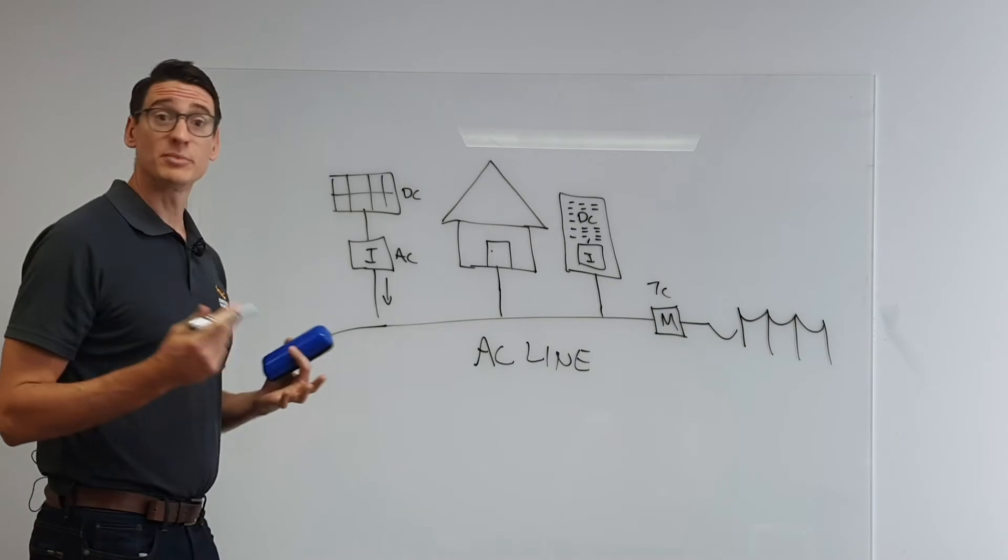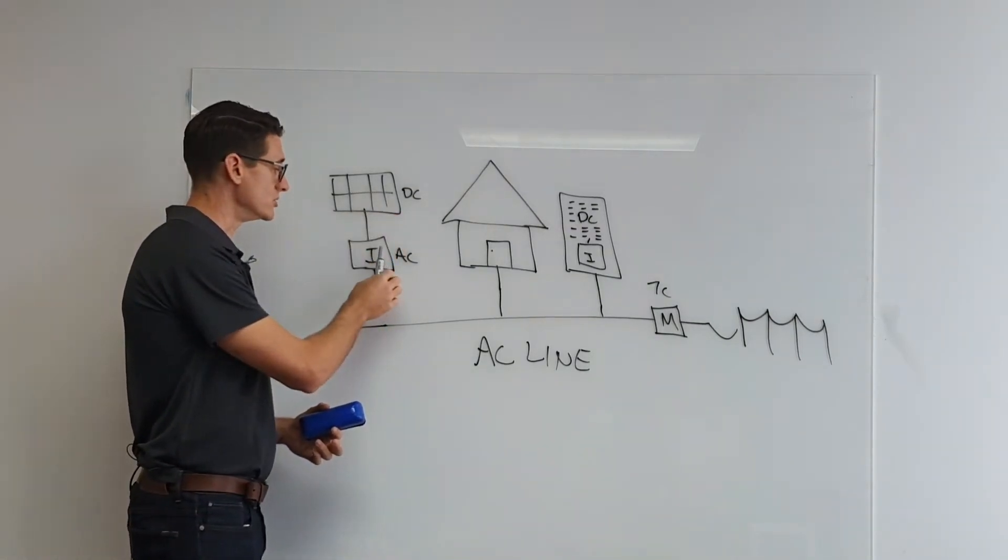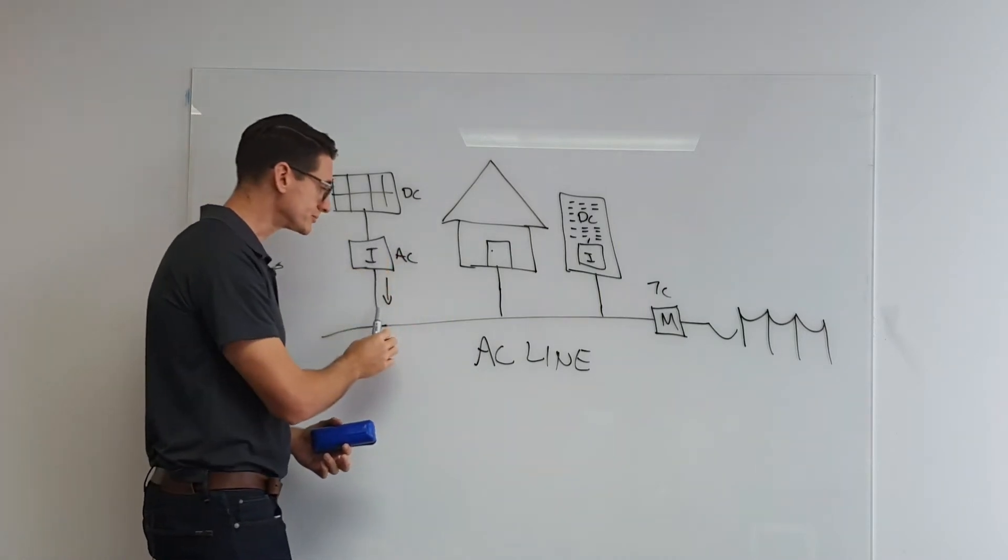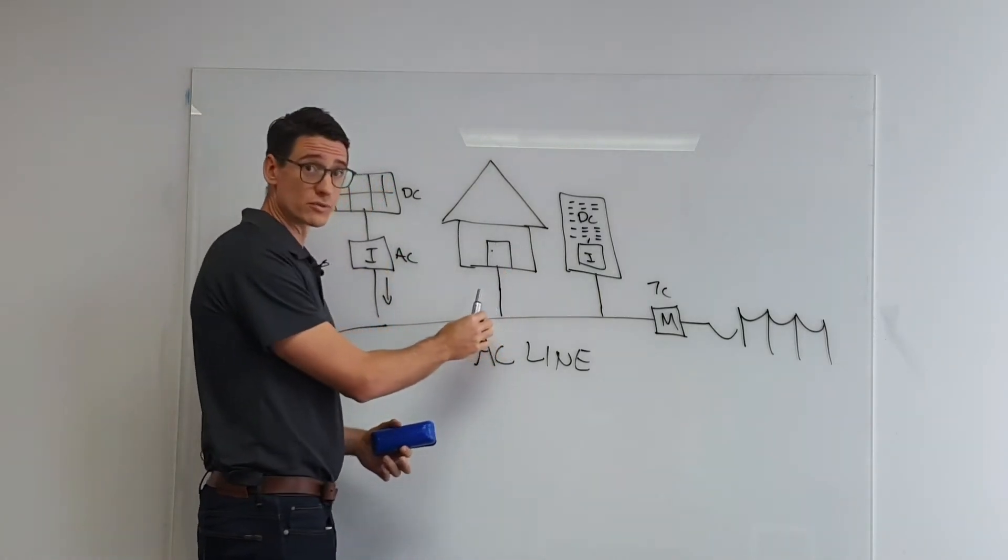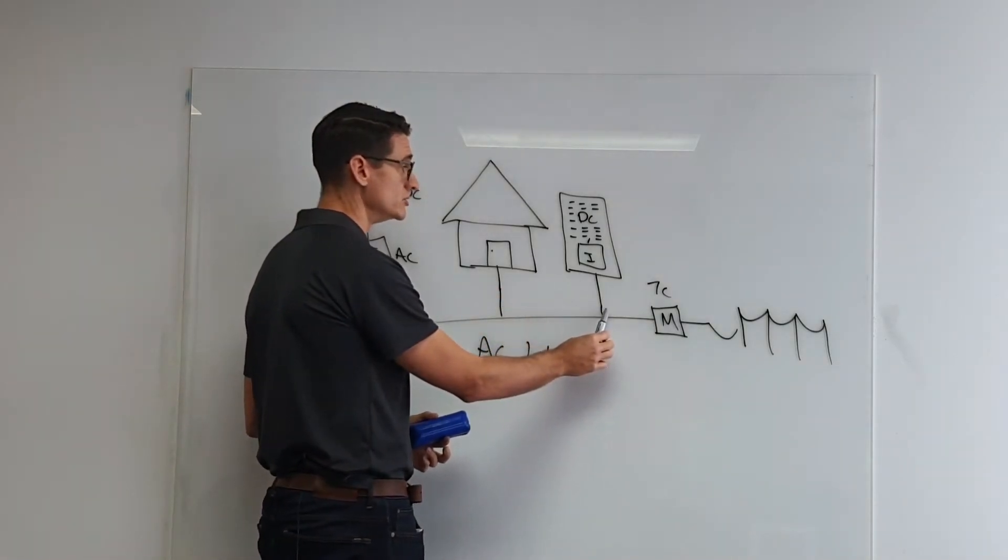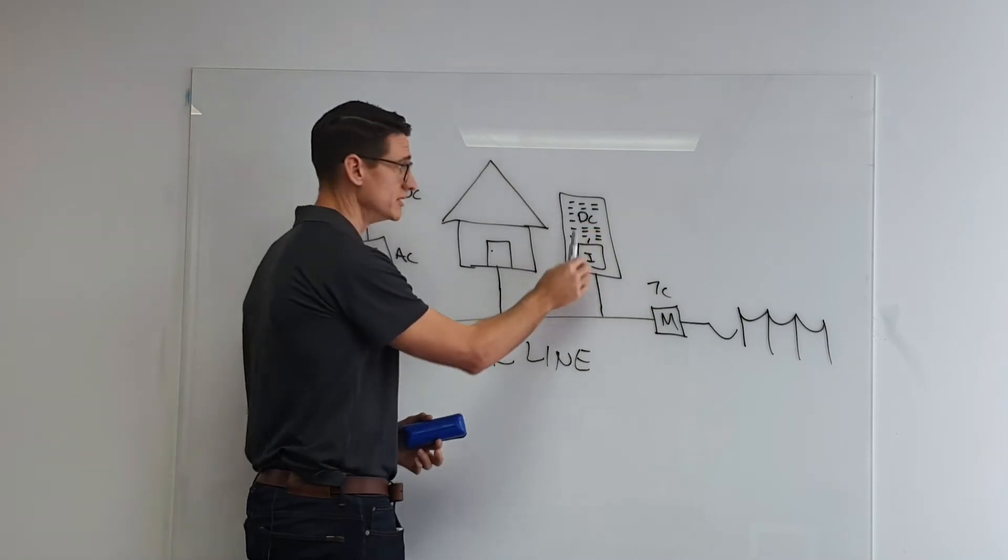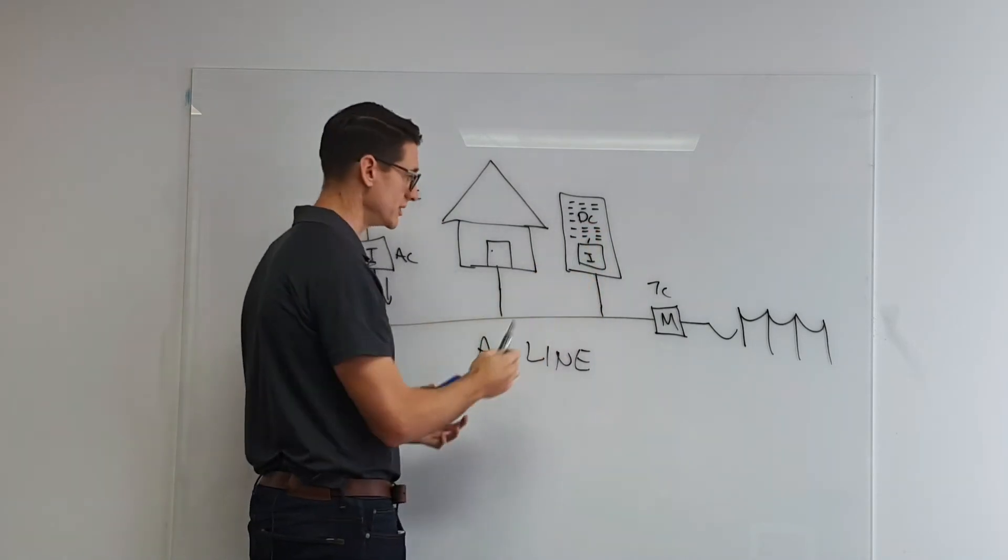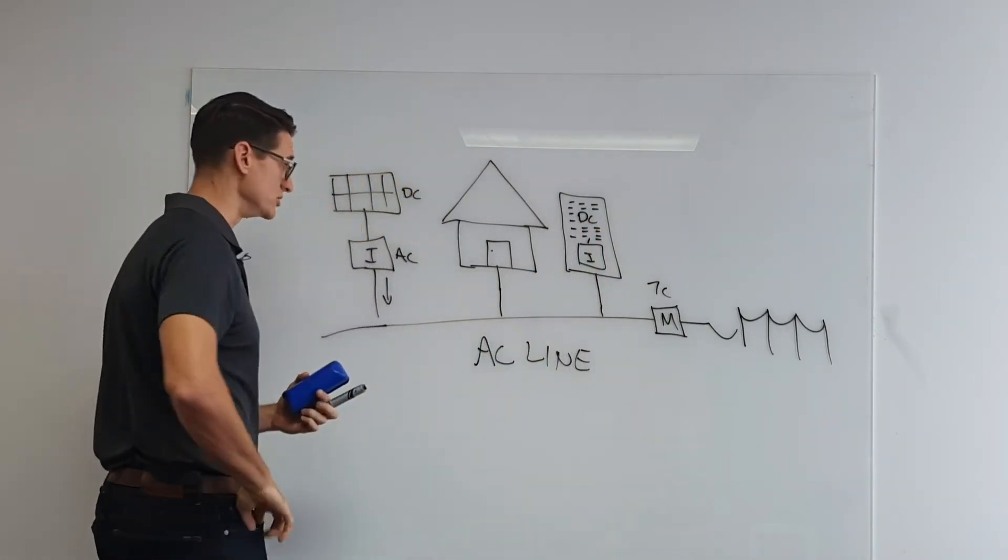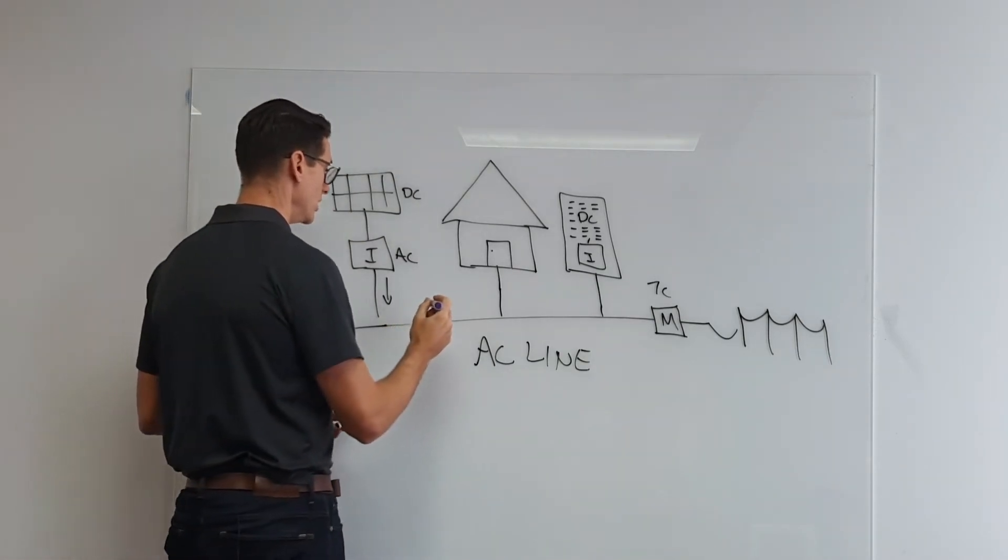So ultimately what's happening is the energy is being produced by the panels in DC going into your solar inverter. The home is always the first port of call, but any spare power will then go to charge the cells within the battery via the small little charge controller inside.